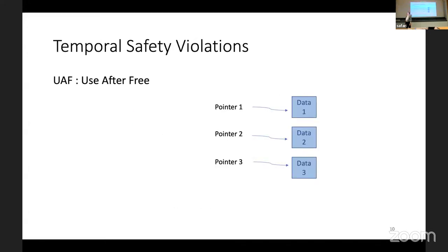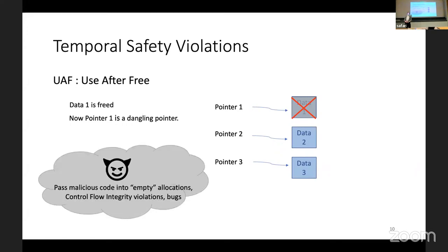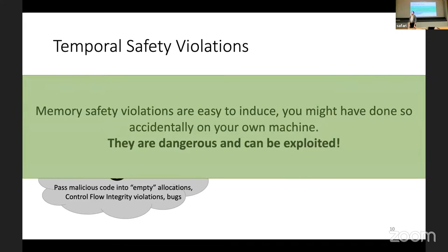For temporal safety violations, here's an example of a use-after-free violation. You have three data objects and some pointers pointing to them. If data one is freed, pointer one — if it's not set to null — would be a dangling pointer. An attacker could pass malicious code into this empty allocation, leading to bugs, control of your system, and control flow integrity violations. Memory safety violations are easy to induce, very dangerous, and can be exploited by attackers, so we really should mitigate them.